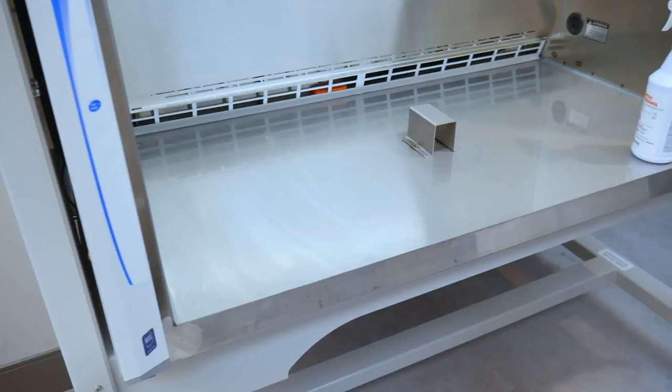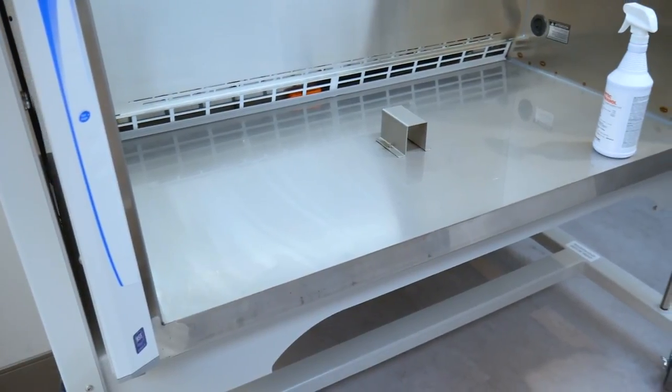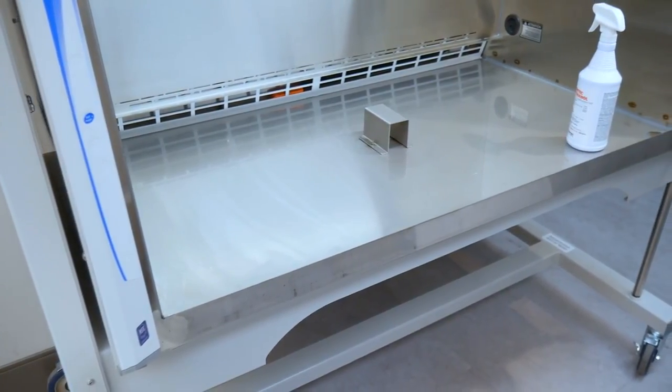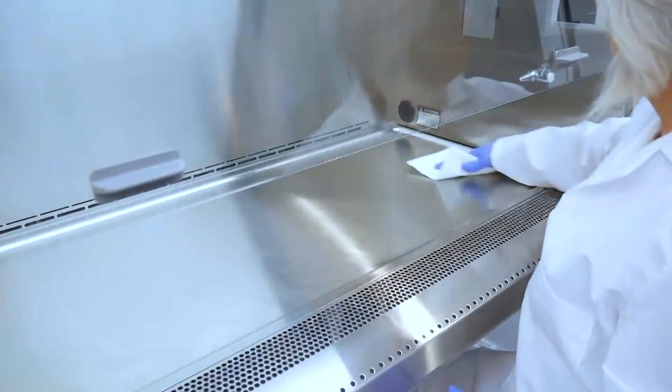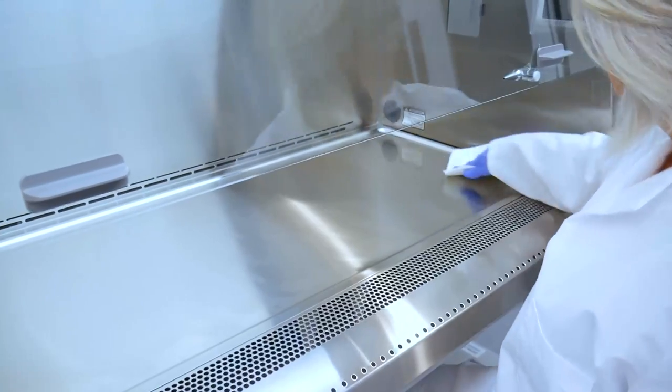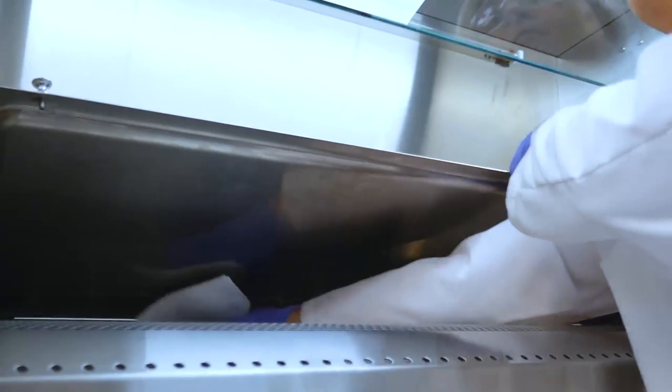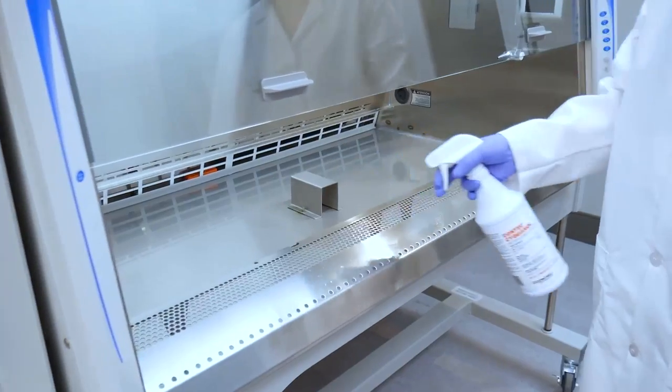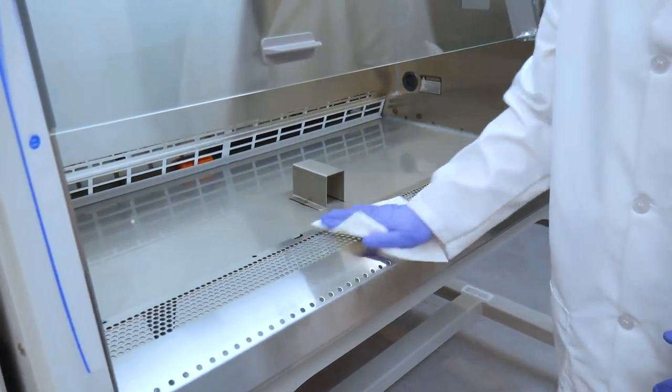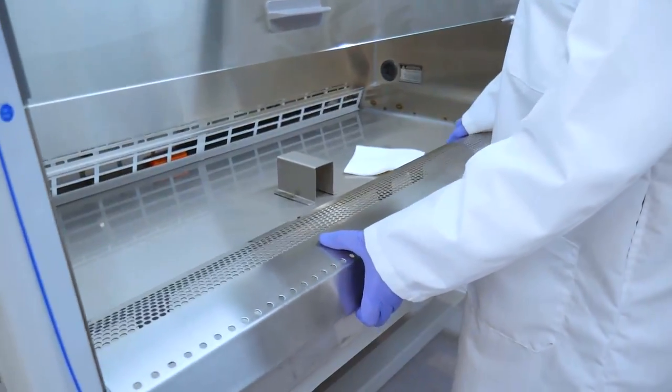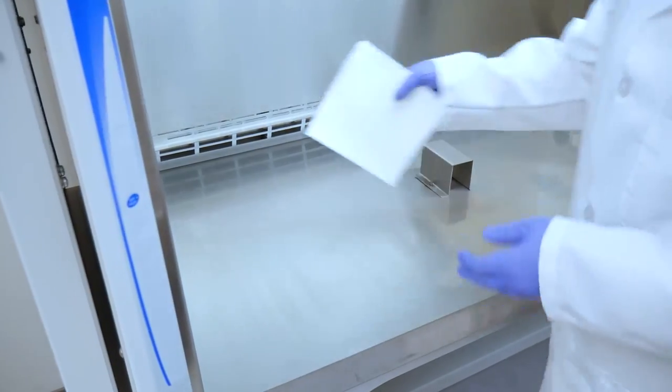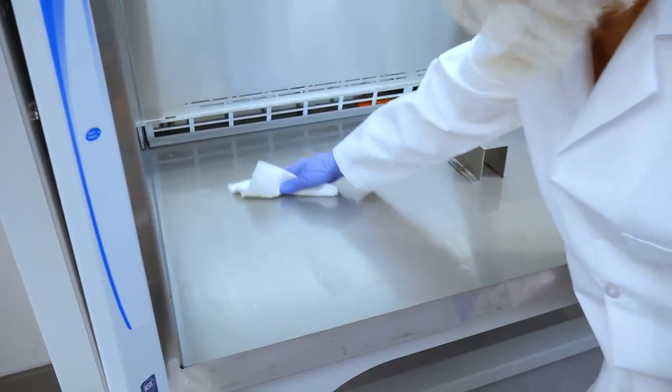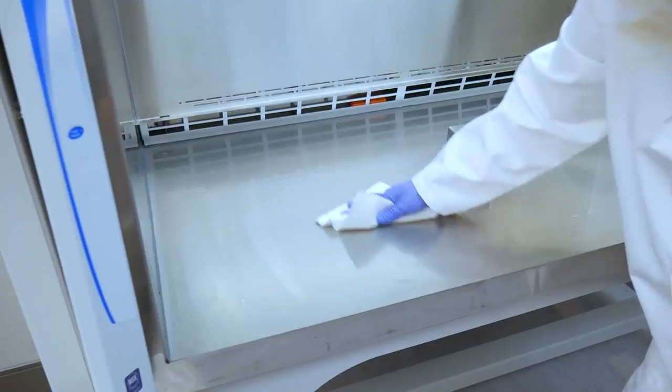In addition to daily cleaning of the cabinet's visible interior, the sump of the biosafety cabinet should also be cleaned regularly. To access the sump, first disinfect the work surface. Next, raise the work surface and clean the underside before removing. The airfoil may now be cleaned and removed, followed by disinfection of the full cabinet sump. Replace all components after cleaning and perform a second cleaning of the cabinet interior before shutting the sash.